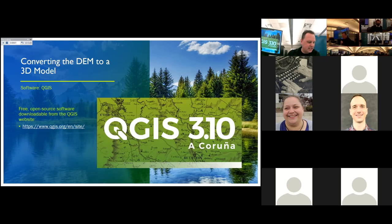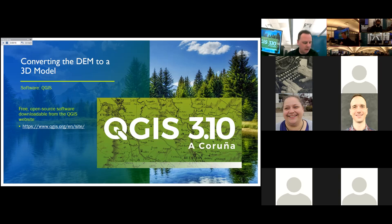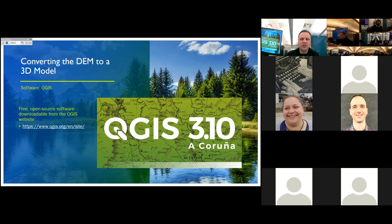The next step involves converting the clipped DEM dataset into an actual 3D model, or STL file, that will be used to generate the final model. To do this, you will need access to QGIS. This is a free and openly available software program available for download from the QGIS website, and it's also available on the lab computers here in 2751. Unlike ArcGIS Pro, QGIS has one particular tool that we need for generating 3D models — this is called DEM 3D Printing.